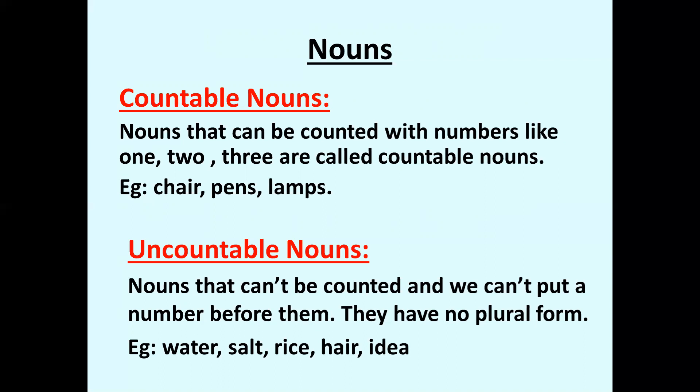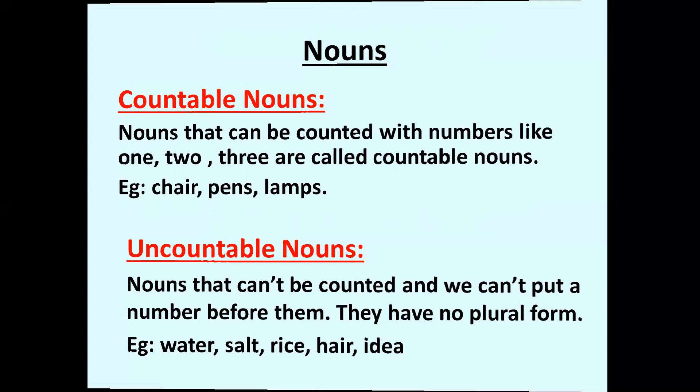Uncountable nouns are nouns that cannot be counted and we cannot put a number before them. They have no plural form. For example, water — can you count it? No. Salt — can you count it? No. Rice, hair, idea — we cannot count them, so we call them uncountable nouns.